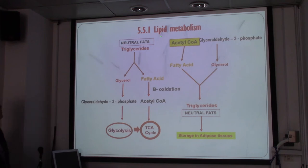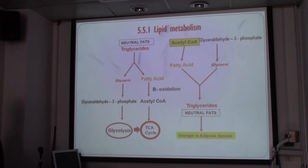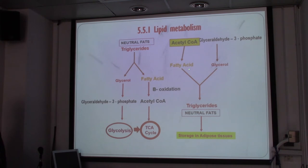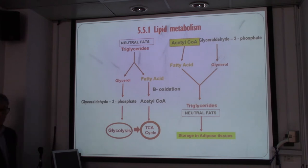To summarize lipid metabolism: we have neutral fats — triacylglycerol — and glycerol forms the pathway for glycolysis moving into the TCA cycle. Fatty acids after beta oxidation form acetyl-CoA, which also enters the TCA cycle to produce energy. On the other side, acetyl-CoA can be used to form fatty acids, and glycerol-3-phosphate comes together to form triacylglycerol, which is stored in adipose tissues.